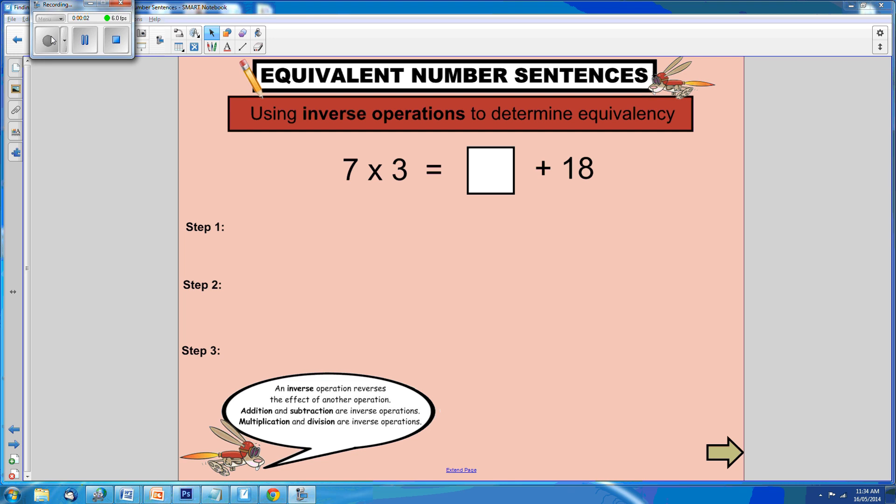We can use our knowledge of inverse operations to create equivalent number sentences. Let's have a look at an example: 7 times 3 equals what plus 18.